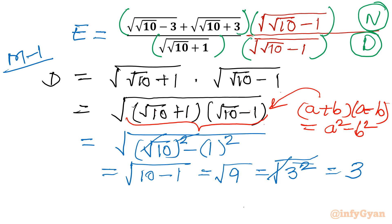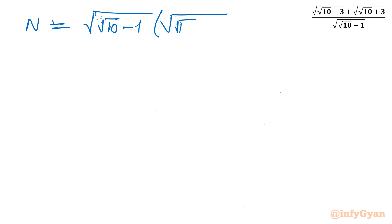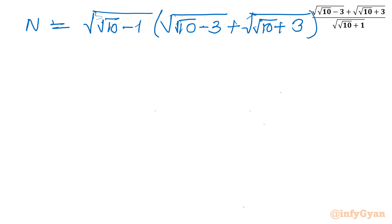Now we will consider our numerator. The numerator N equals square root of (√10 minus 1) times the quantity [square root of (√10 minus 3) plus square root of (√10 plus 3)]. This is our numerator, and now we have to simplify it.